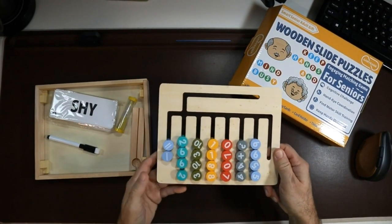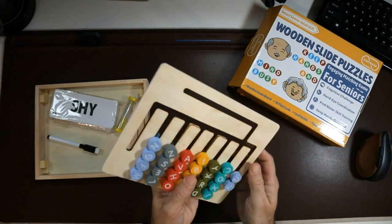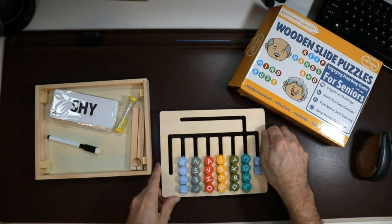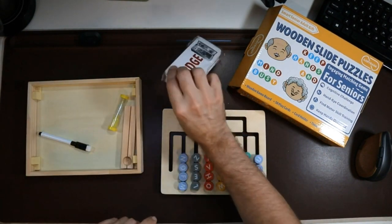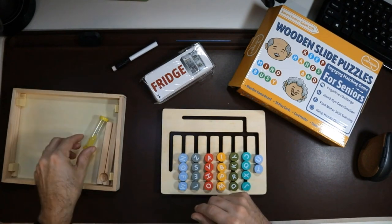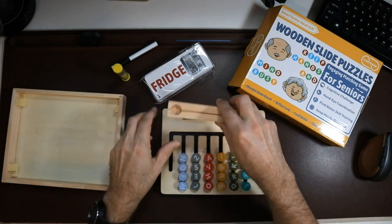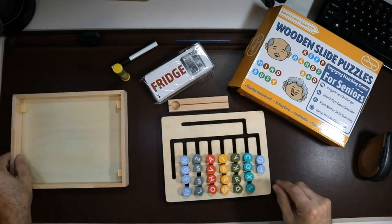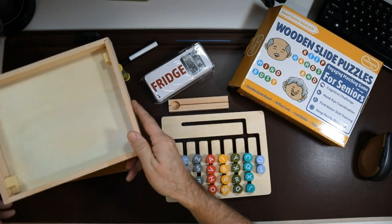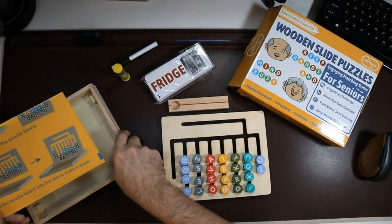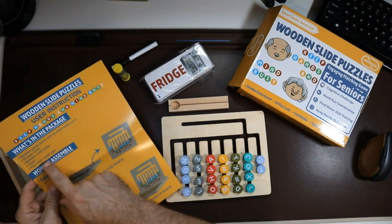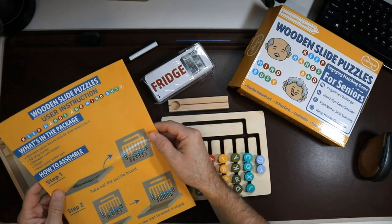Inside the box, you've got the puzzle board itself. One side has numbers, the other side has letters. You've got your gameplay cards, an erasable pen and a timer, and then a stand for the cards and the timer. And then of course, you've got this nice wooden box that you can keep everything in with very easy instructions as well.